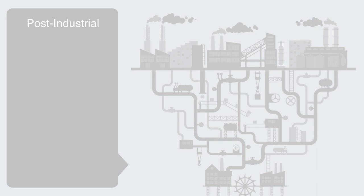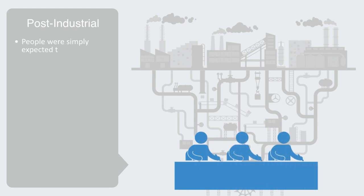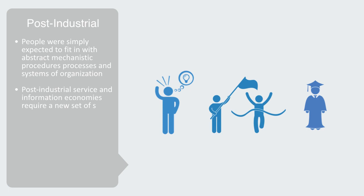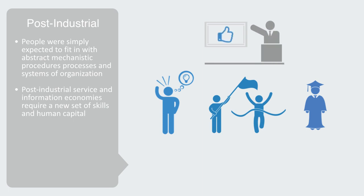The industrial age was one of standardization and mechanization. In order to reduce the complexity of the interaction between people and technology, people were simply expected to fit in with abstract mechanistic processes, procedures, and systems of organization, as exemplified by the industrial age model of education and factory work. But this industrial economy is rapidly becoming a thing of the past, as manufacturing and basic information processing have become commoditized. Post-industrial service and information economies require a new set of skills and human capital based around innovation, entrepreneurship, education, and knowledge — none of which really happen without the engagement of the subjective and qualitative dimension of people. This requires us to go beyond the technocratic paradigm of industrialism and recognize the importance of the social domain within our engineered environment.